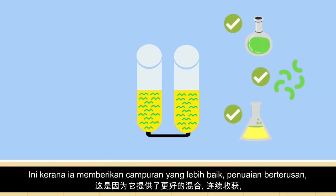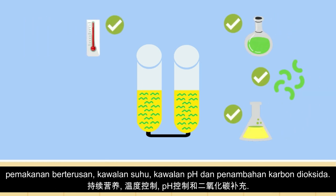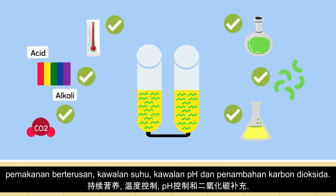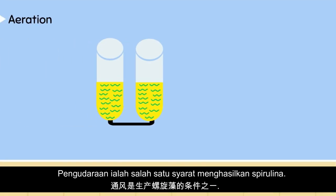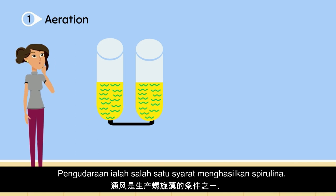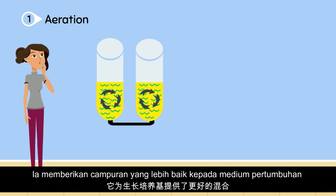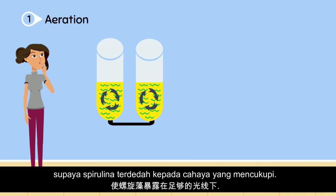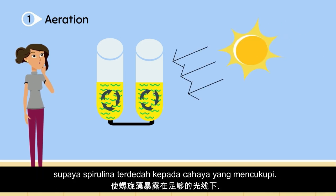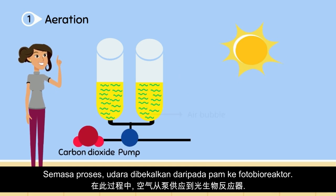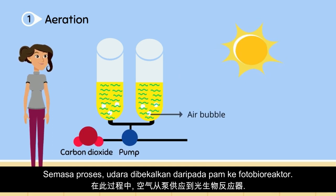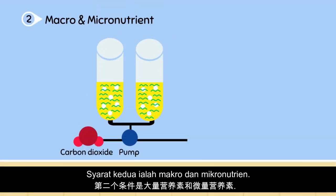The photobioreactor provides good mixing, continuous harvesting, continuous feeding, temperature control, pH control, and CO2 addition. Aeration is one of the key requirements to cultivate spirulina, because it agitates the growth medium for better mixing of the spirulina filaments throughout the growth vessel and adequate exposure to light. Air bubbles are supplied from a pump to the bioreactor.